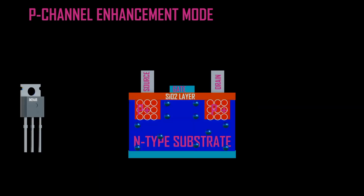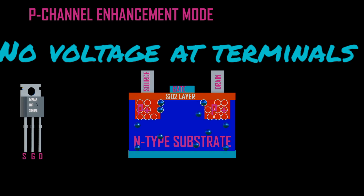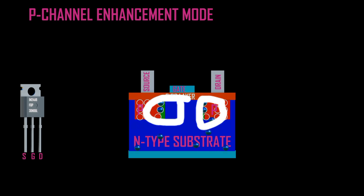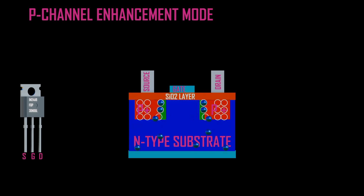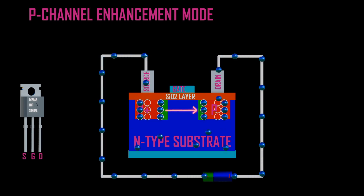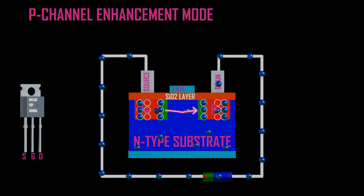In the P-channel MOSFET with no voltage applied between source and drain, electrons and holes at the junction recombine, forming a depletion region which prevents electrons or holes from jumping. When a small voltage is only applied between the source and drain, an electric field is formed between the source and drain, facilitating electrons jumping from drain to source and allowing small conduction of current.